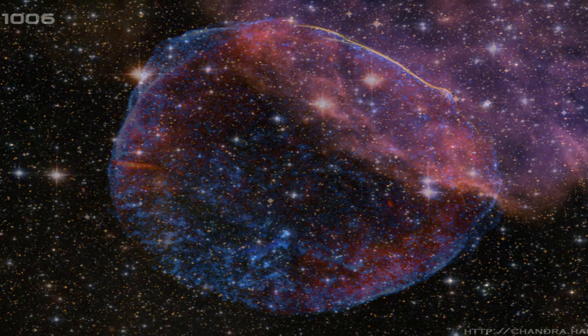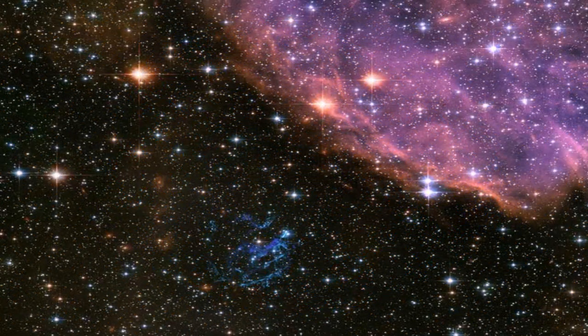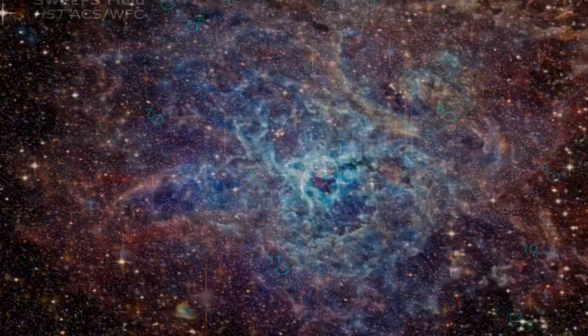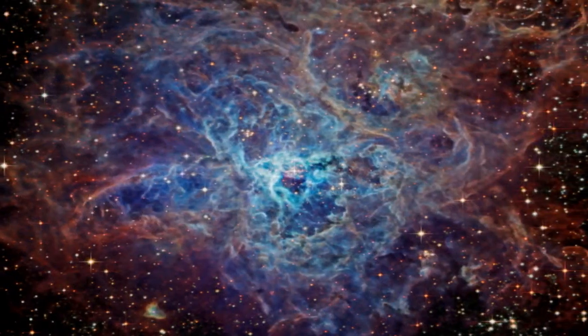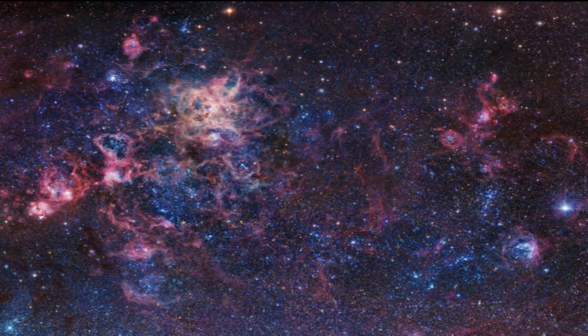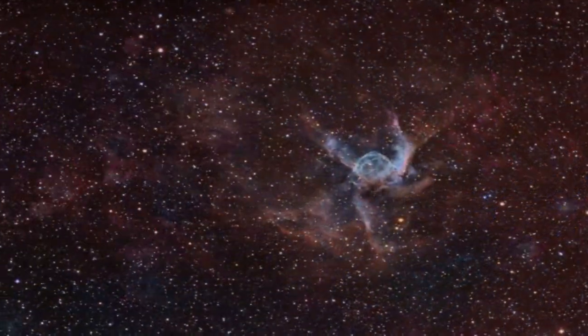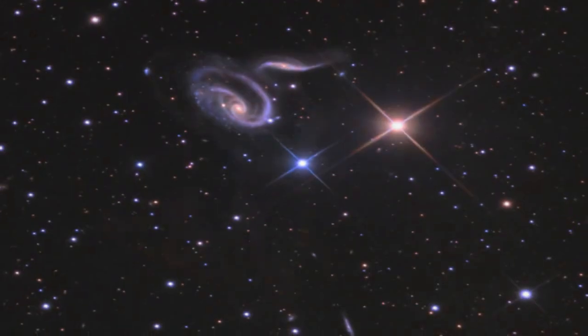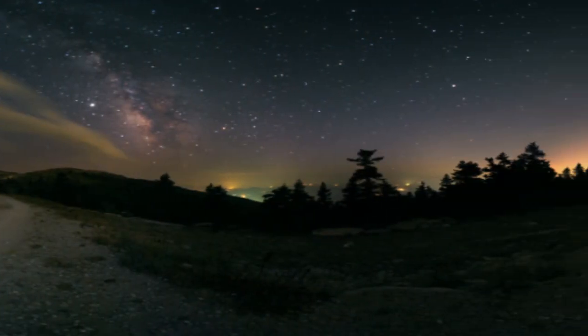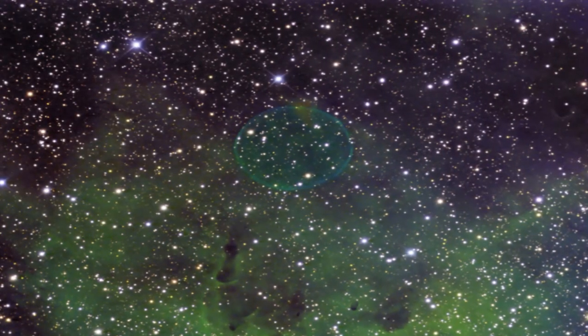Kepler is a three and a half year mission. At the end of three and a half years, what is your hope for what information and knowledge we'll have that we didn't have before Kepler? At the end of three and a half years, we should know whether planets like the Earth are common or rare in the galaxy. We don't know whether Earths will be plentiful or whether the Earth is unique.